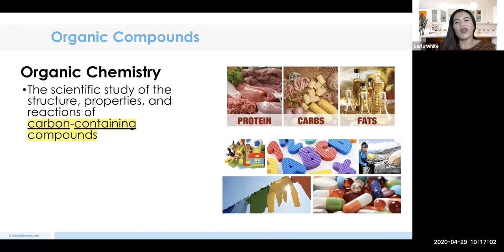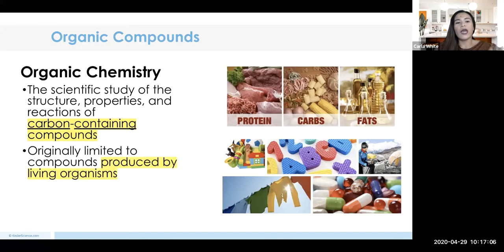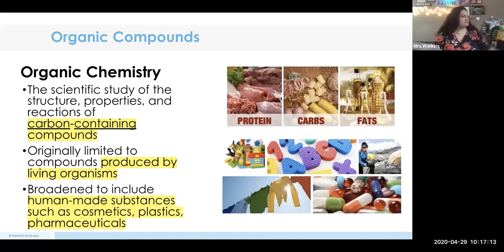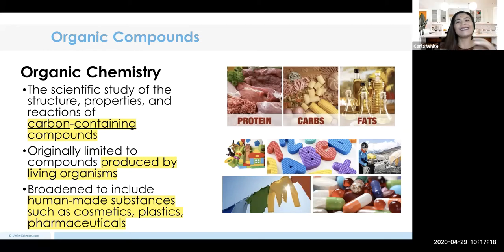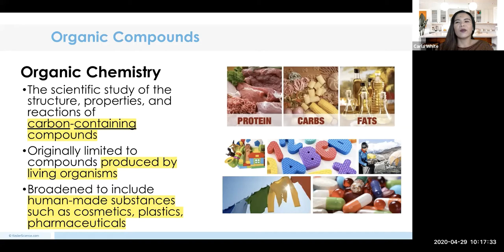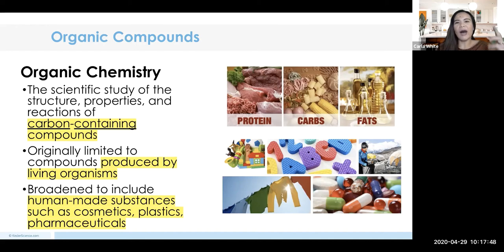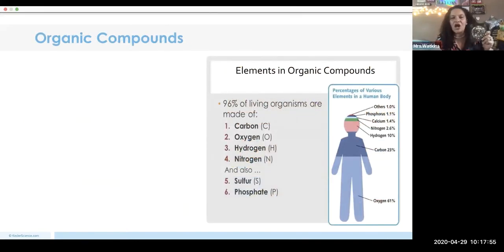Organic chemistry has to do with these basic food compounds that we enjoy eating, and all of them contain carbon. Originally, organic compounds were limited just to living organisms, but now humans are able to synthesize products that are also considered organic — such as cosmetics, medicine, and plastics. Anything that says biodegradable is organic.